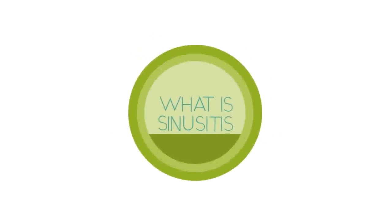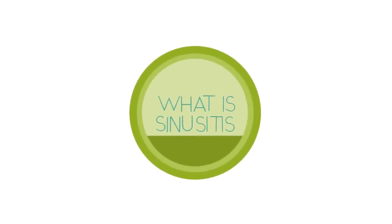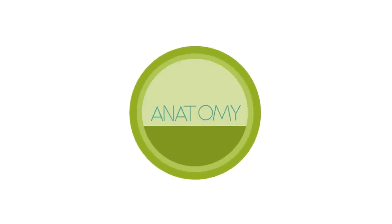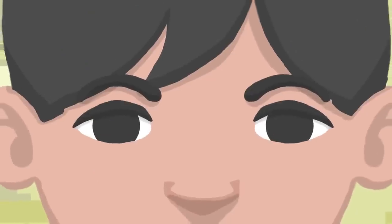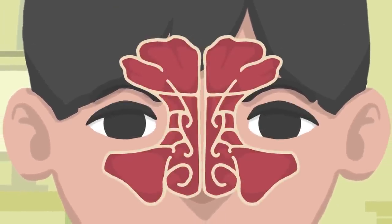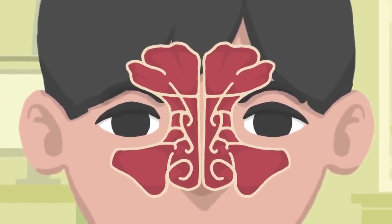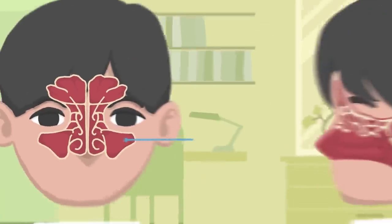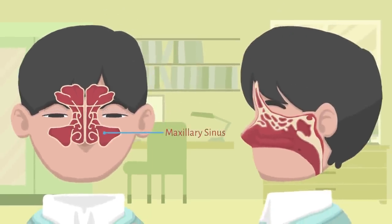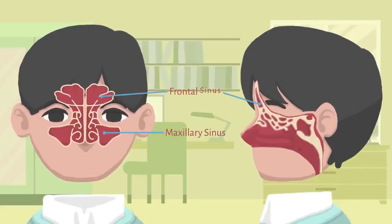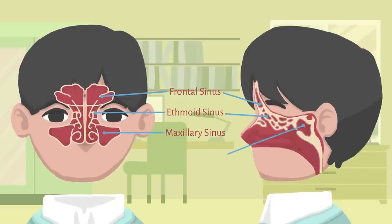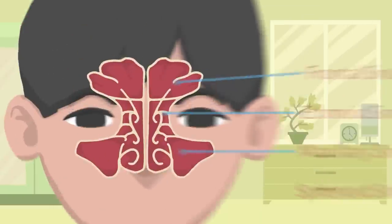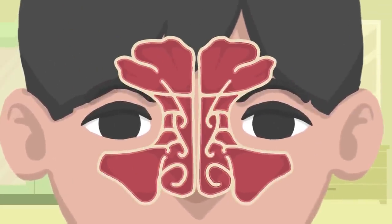What is sinusitis? Sinuses are hollow spaces in the bones around the nose that connect to the nose through small narrow channels. Humans possess four paired paranasal sinuses: the maxillary sinuses in the cheekbones (the largest), the frontal sinuses at the low center of the forehead, the ethmoid sinuses between the eyes, and the sphenoid sinuses in the bones behind the nose. They are lined with soft pink tissue called mucosa.